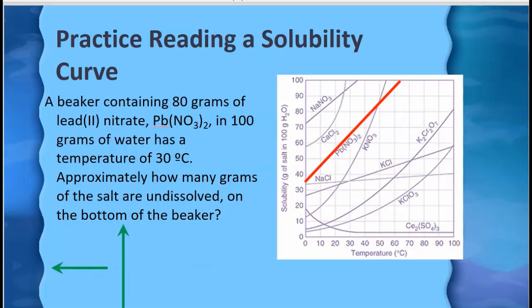So let's do a little practice. I have two quick practice problems here reading a solubility curve. I'm going to look at the lead nitrate line here which I've highlighted in red for us, because that's what it says in the problem. We have 80 grams of lead nitrate and it's at a temperature of 30 degrees Celsius.